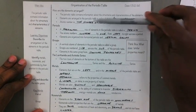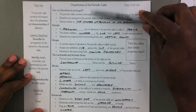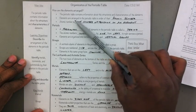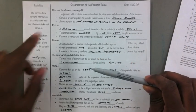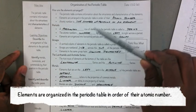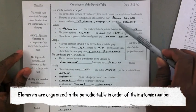First, how is the periodic table arranged? The periodic table contains information about the structures and characteristics of the elements. Elements are arranged in the periodic table in order of their atomic number.